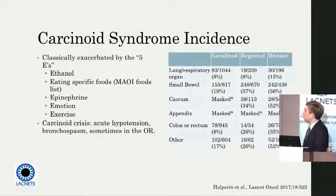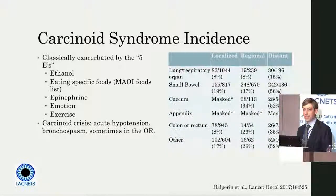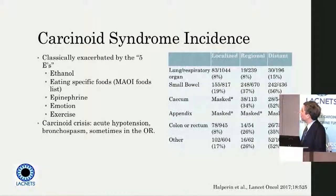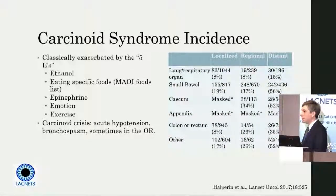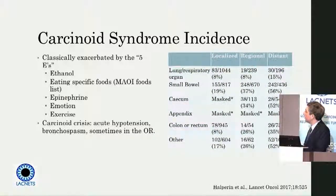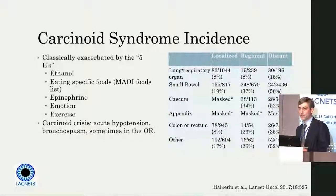We talk about a couple of classic exacerbating factors, which came up at lunch today. We talk about ethanol or alcohol-specific foods, and for the physicians in the room, this really just overlaps with the MAOI antidepressant list, where we're not supposed to have people eat aged fruits and cheeses and meats. And then epinephrine, which can be brought on by emotion or exercise. To make it harder for the trainees, we tell them there are five E's instead of just three.